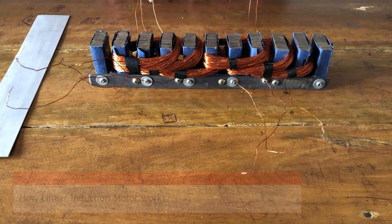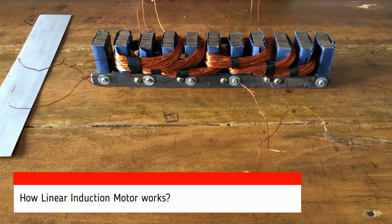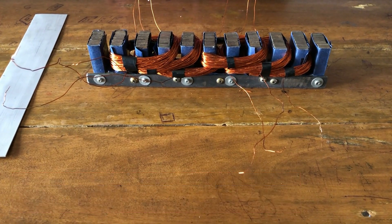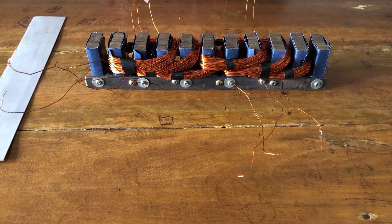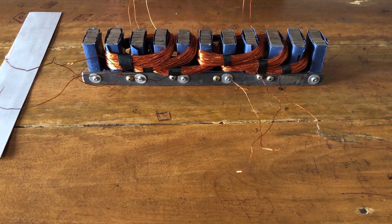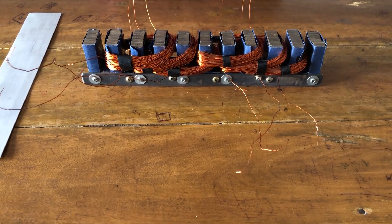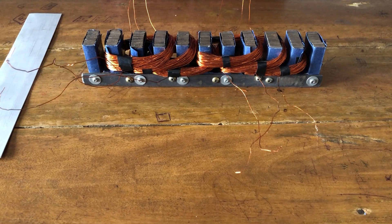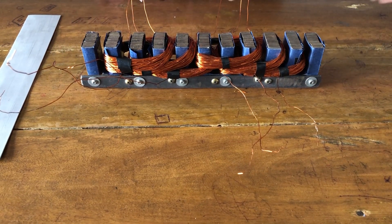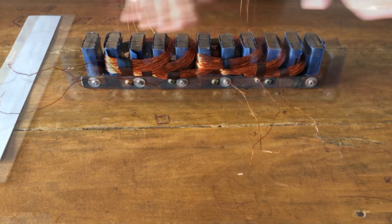At the very beginning, I would like to give you a brief on how a linear induction motor works. As we know, in the case of a general induction motor, the stator is circular. Therefore, the magnetic field created inside the stator is rotational. However, in our case, we cut the stator into a linear structure. Therefore, the magnetic field created is linear.